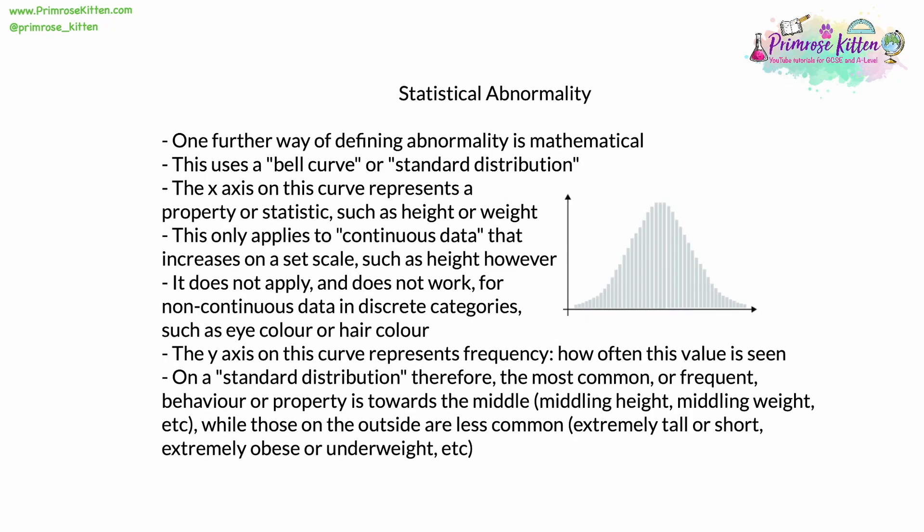Another way of defining abnormality is mathematical or numerical, using a bell curve — sometimes known as a standard distribution. The x-axis represents a property such as height or weight: something continuous that can be numerically measured. Continuous data increases along a set scale, like height in centimetres or weight in kilograms. It doesn't work for discrete data — things in separate categories like eye colour or hair colour — which can't be placed on a continuous scale.